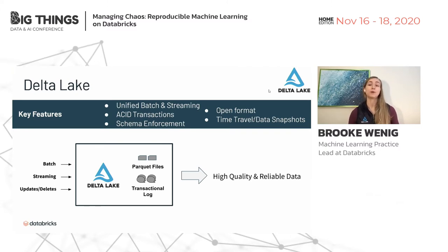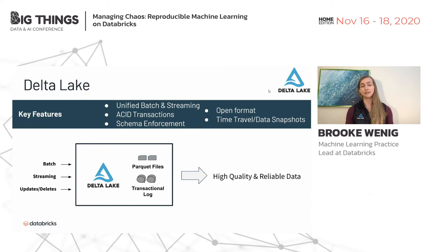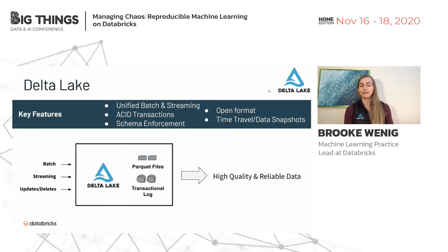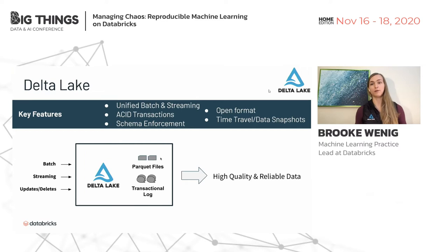One of my favorite features is time travel — the ability to take data snapshots. If I build a model today and that data has a streaming job writing to it overnight, then tomorrow I build a new model with different hyperparameters that performs better — did it perform better because of additional data or because of those hyperparameters? With Delta Lake's time travel, I can fix my data at a given snapshot without copying it. I just say 'keep all data as of November 1st' — the transaction log goes back to that earlier state.